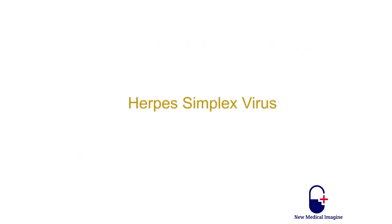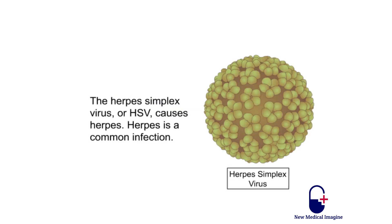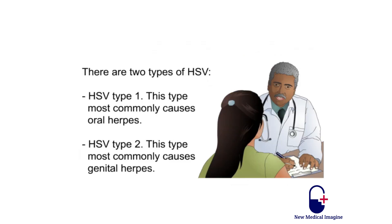There are two types of HSV. HSV type 1 most commonly causes oral herpes. HSV type 2 most commonly causes genital herpes.